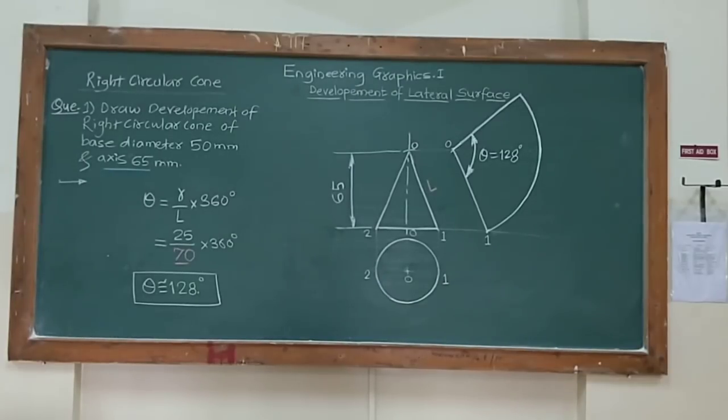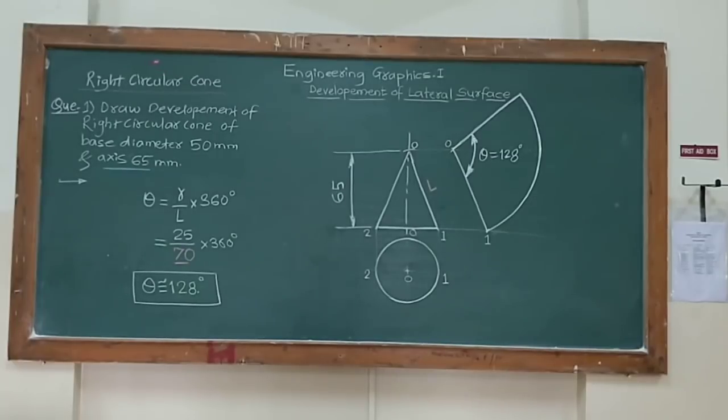Next question is development of right circular cone, another important topic. So right circular cone of base diameter 50 mm and axis is 65 mm.